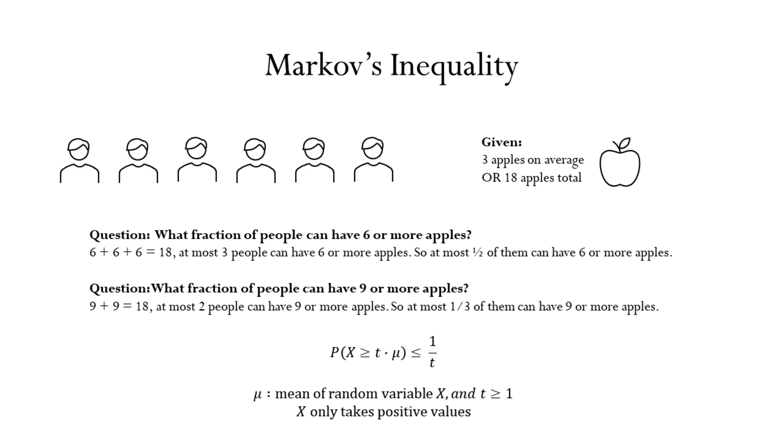This is the essence of Markov's inequality. It is an inequality about large outliers. There is a constraint on the fraction of large outliers because of the mean.